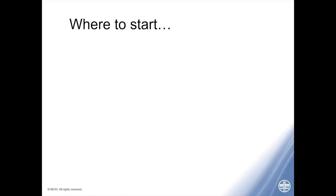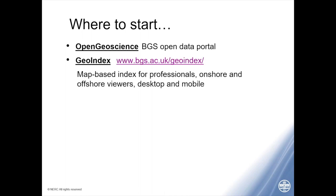When looking for digital geological resources from the BGS, the first place I'd recommend is something called Open Geoscience — the BGS Open Data Portal. The first thing you'll see there is GeoIndex, probably the main port of call for professional geologists and engineers. There are onshore and offshore versions, and it also feeds into desktop and mobile platforms. GeoIndex pulls on a huge variety of databases covering geology, boreholes, collections such as rock, borehole cores and fossils, hazards like earthquakes and landslides, and geochemical data through our G-Base database.